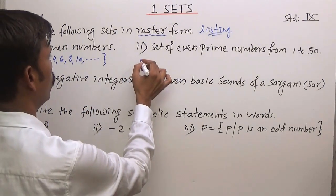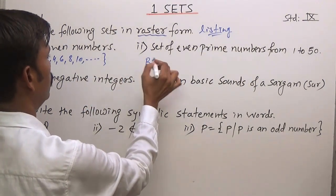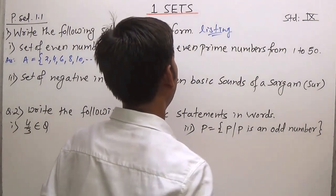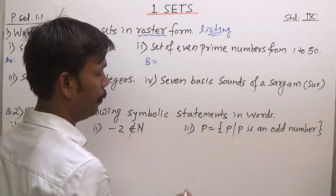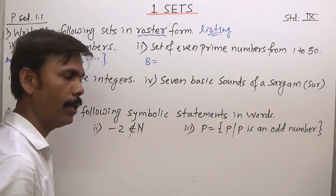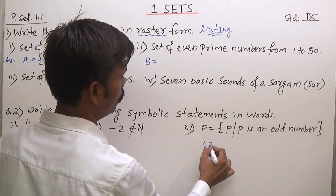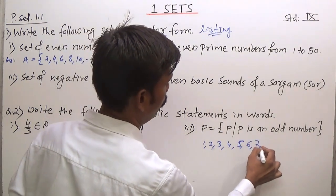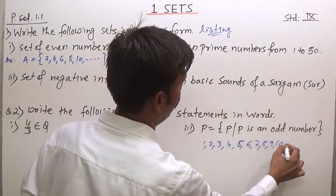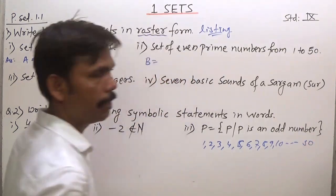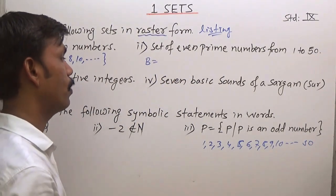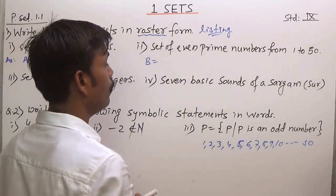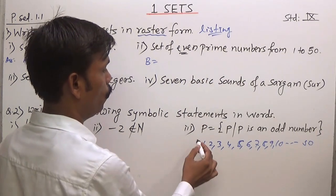The second question is set B: set of even prime numbers from 1 to 50. A prime number is a number which is divisible by 1 and itself. So if you write numbers 1, 2, 3, 4, 5, 6, 7, 8, 9, 10, from these we have to collect only prime numbers — specifically even prime numbers.